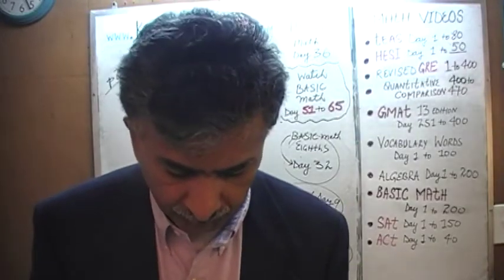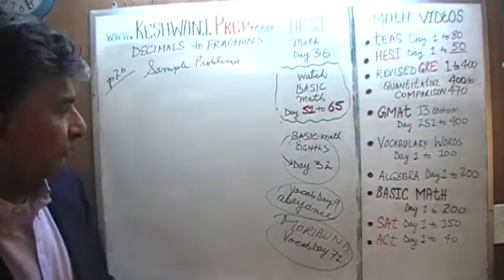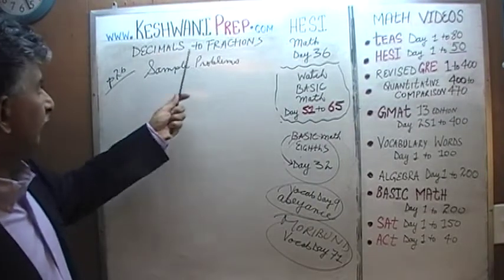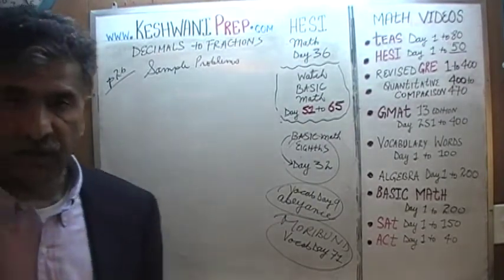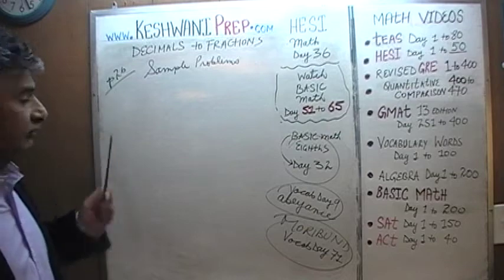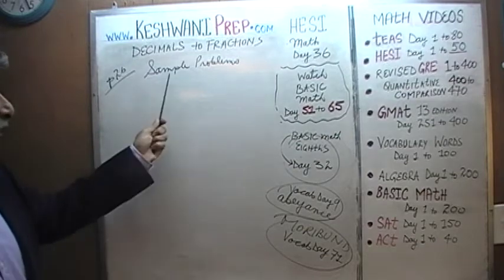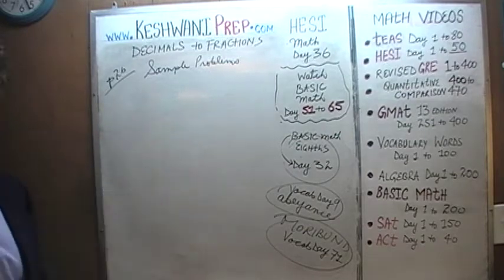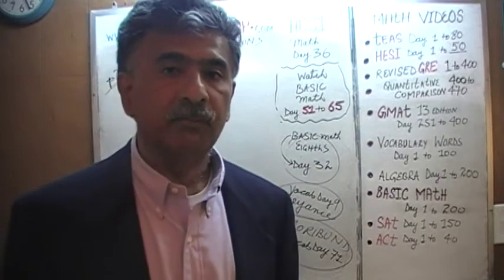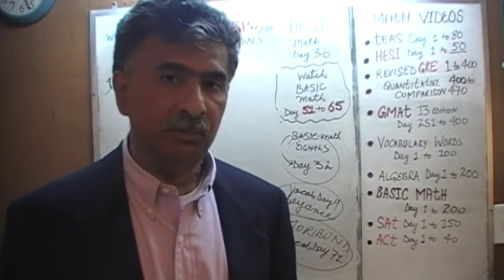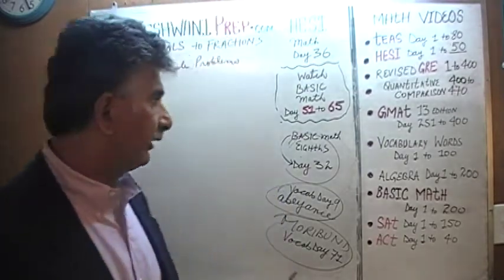We are in the process of solving problems having to do with conversions from decimals to fractions. We are on page number 26 and we are doing the sample problems. We did 1 through 6 yesterday. Today we are going to pick up from 7 — we will do 7 through 10. Let's get going.